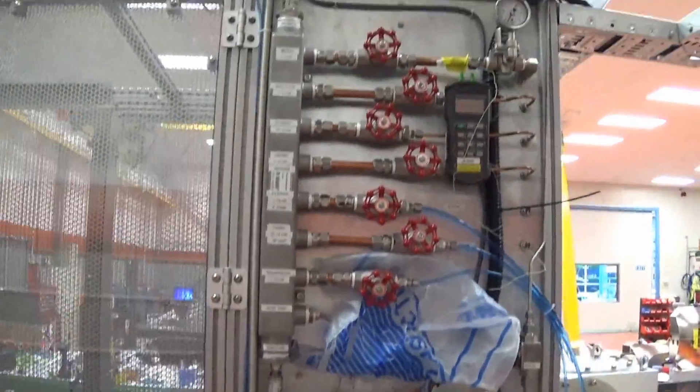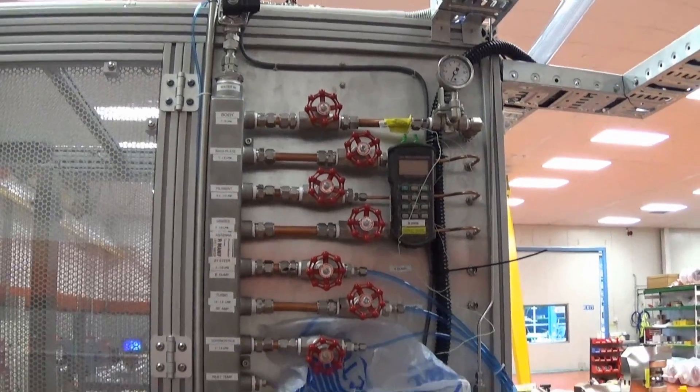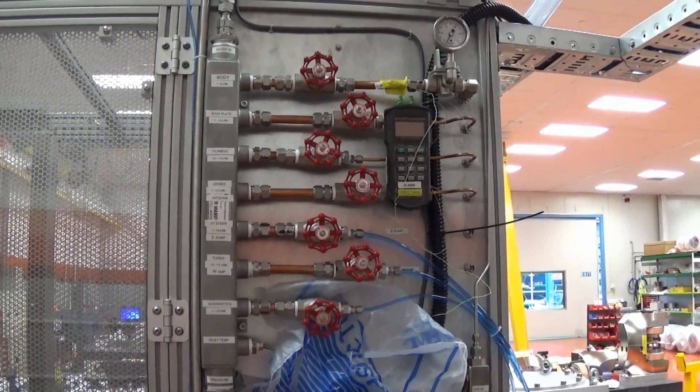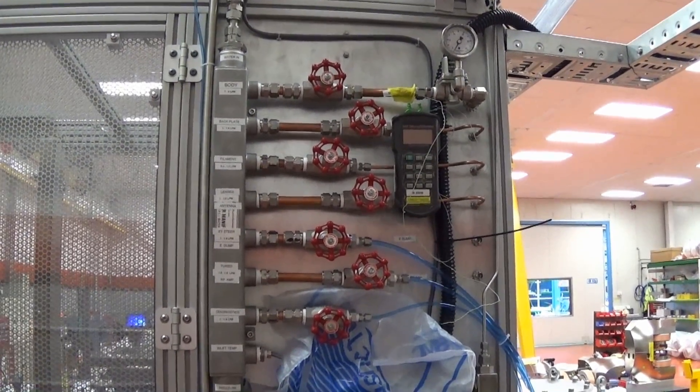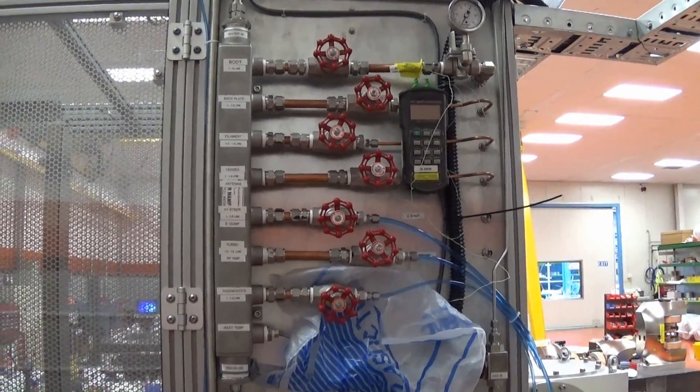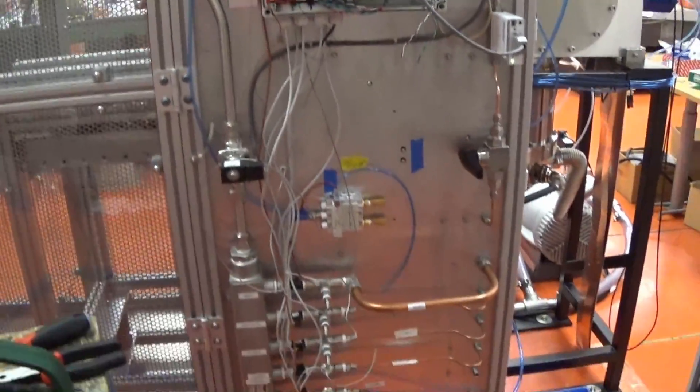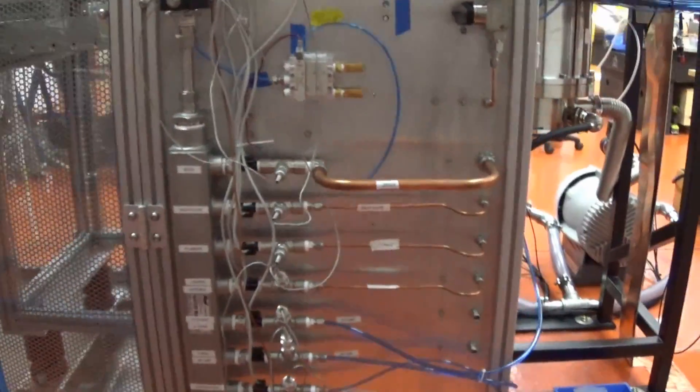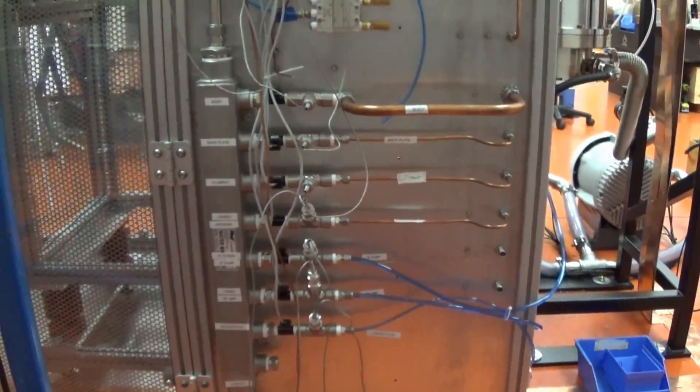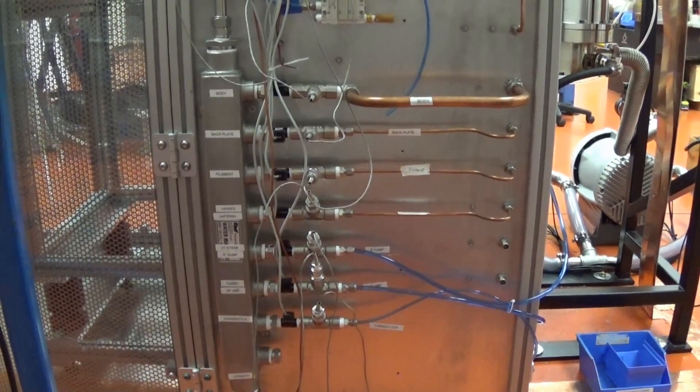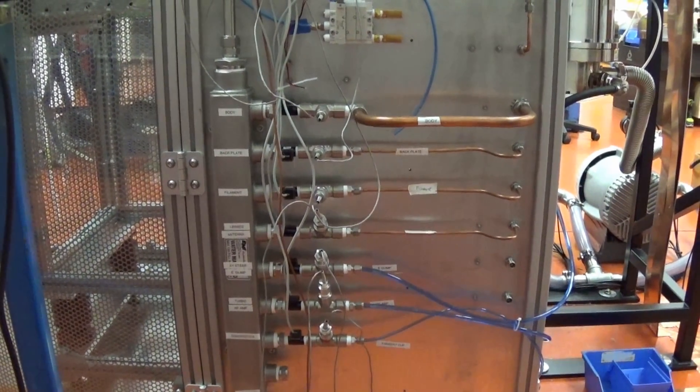And up here, this panel is the water manifold for all the cooling water. So the cooling water comes out of these individual lines where those valves are, into the various components that it cools. And then it returns through this manifold here at the bottom. And all the wires coming out of the connections of the manifold, that's for monitoring the flow of the water and the temperature of the water.